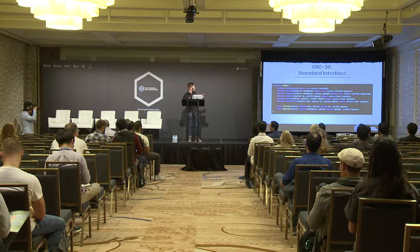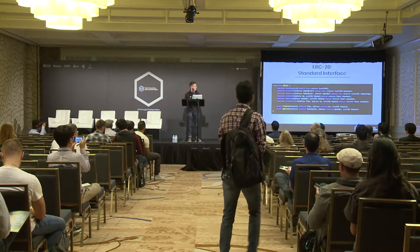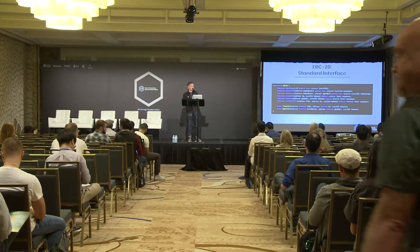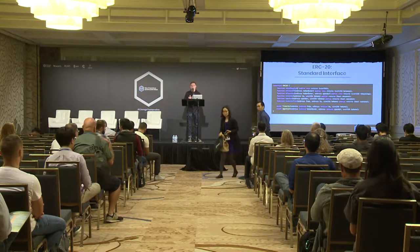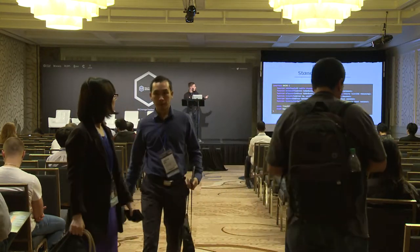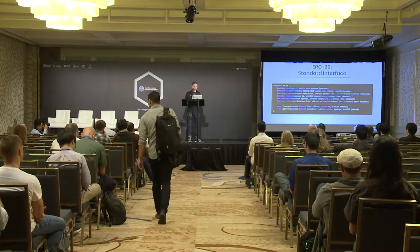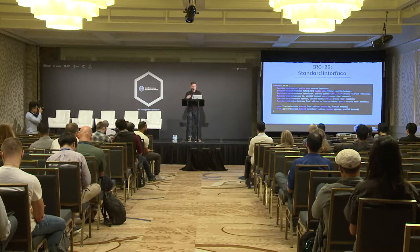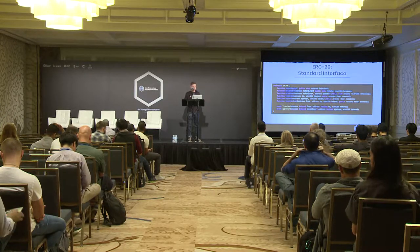The interface is just six functions and two events. The first three functions are constant functions in Solidity — they just read blockchain data. The first is total supply, which returns the supply of tokens in existence, used to calculate things like market cap and record minting or burning. The second, balance of, takes an Ethereum address and returns the balance of that token owner. The third is allowance, which gives another Ethereum account or smart contract a spendable amount of tokens that the token holder approves them to spend.